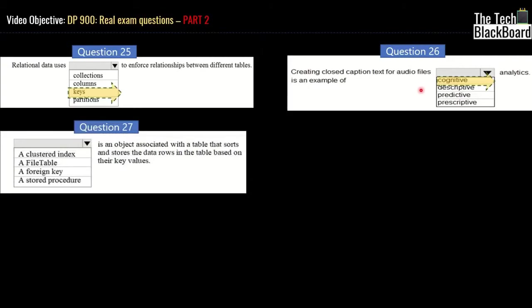Question twenty-seven: identify the object associated with a table that sorts and stores data rows based on their key values. There are two major index types: clustered index and non-clustered index. A clustered index stores the actual data rows inside the table based on the column on which it is created. The other options are not valid. The correct answer is a clustered index.